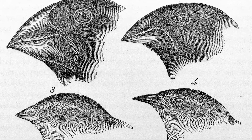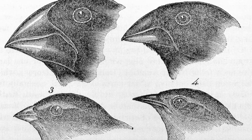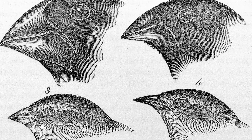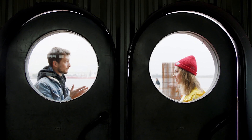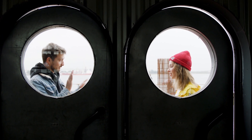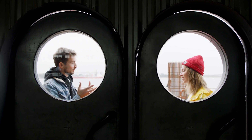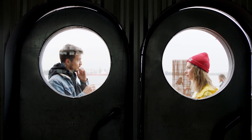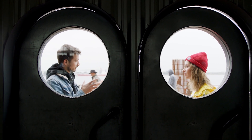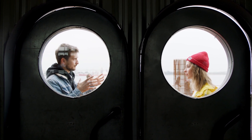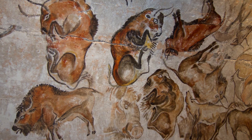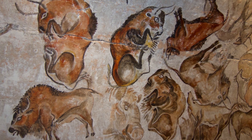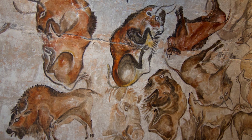Finches, for example, can have very different beaks depending on the food which was available for their ancestors. The fact that you can understand me right now is also due to evolution. Compared to other primates, humans have developed sophisticated languages, which became especially useful for our ancestors when they decided to hunt together and form tribes.